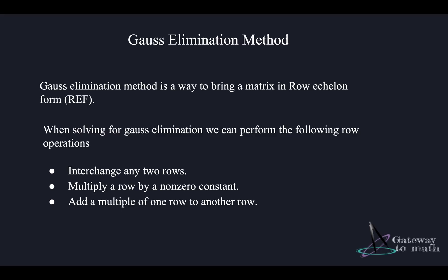When solving using Gauss elimination, we can perform the following row operations: we can interchange any two rows; we can multiply a row by a non-zero constant; and we can add a multiple of one row to another row. These are the three operations allowed in Gauss elimination. To recap: Gauss elimination brings a matrix in row echelon form, which helps us find the values of the variables X, Y, Z — depending on how many variables the equation has.